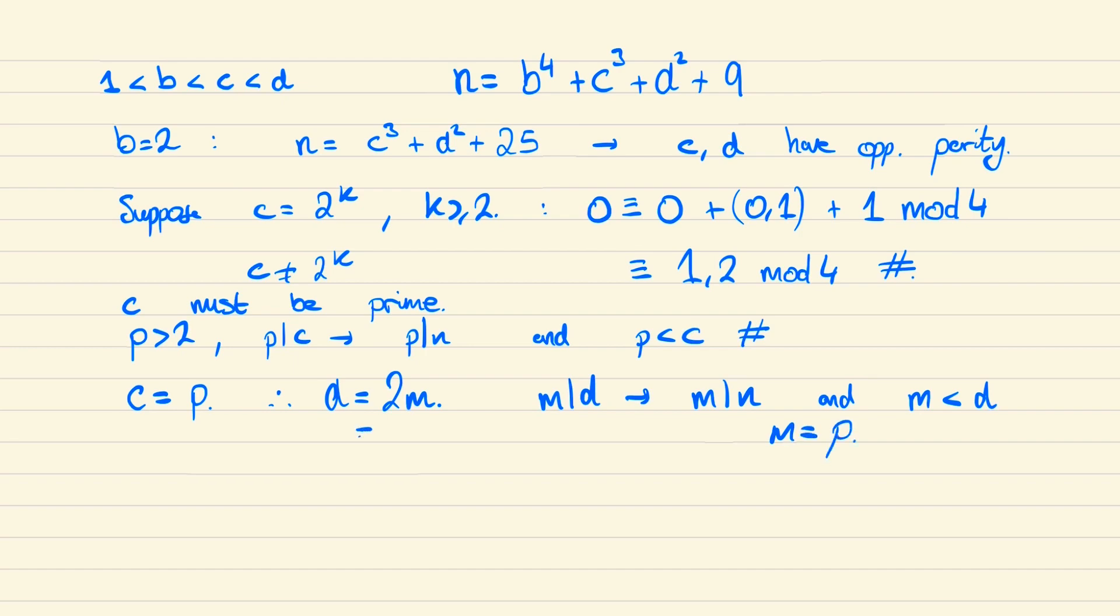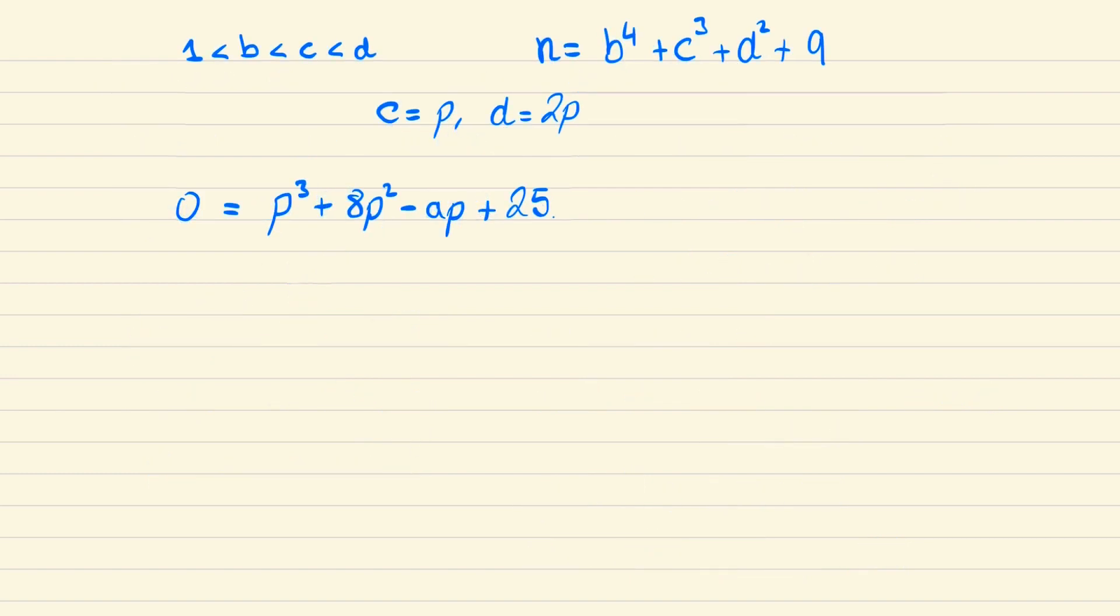And so d is equal to 2p, and likewise since p divides n, we could write that n is equal to a times p for some constant a. And so now we can write n as ap equals c cubed plus 2p all squared plus 25. And then bringing ap to the right side we have the following. And by the rational root theorem, we know that if a solution exists it must divide 25. And so since p divides 25 and is prime, we must conclude that p is equal to 5.